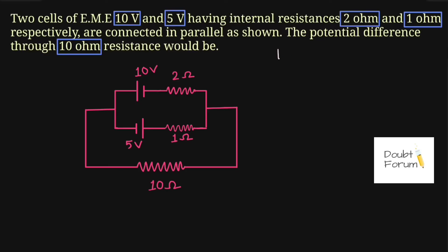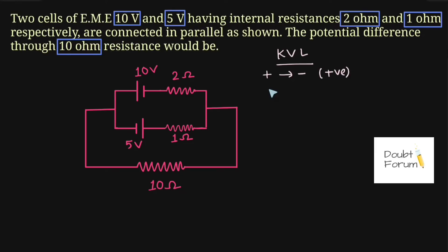I will be solving this question using KCL and KVL alone. For that, I am mentioning a few rules which I will be applying here. Whenever we move from higher potential towards lower potential, I take that polarity as positive. Whenever we move from lower potential towards higher potential, I mark that polarity as negative.